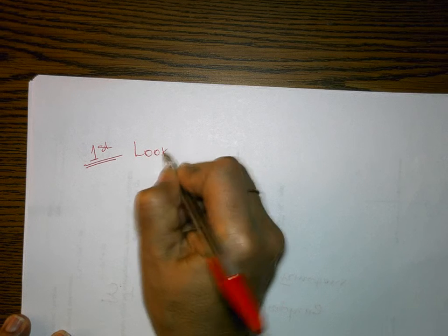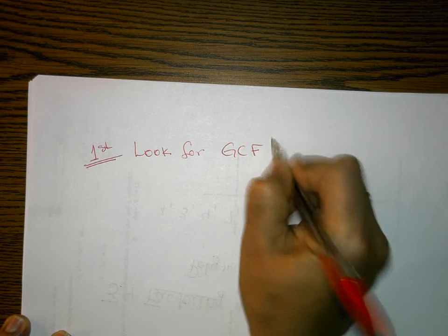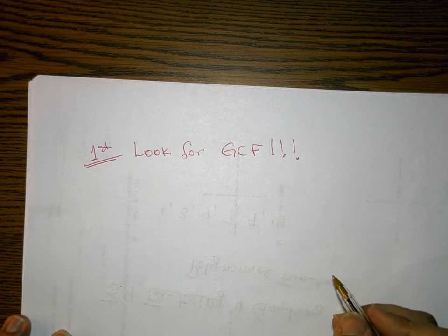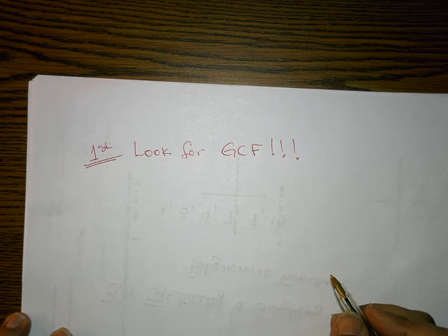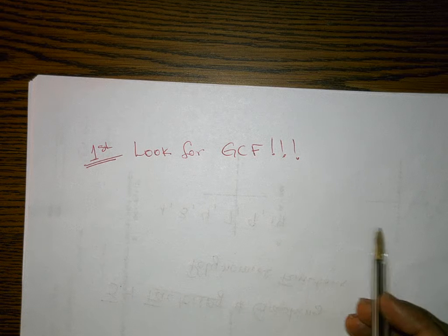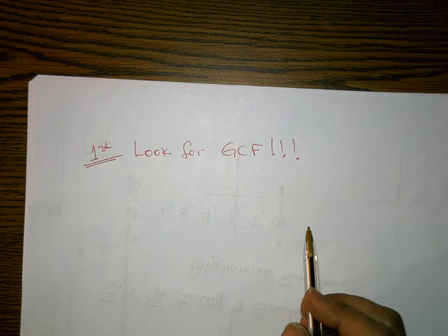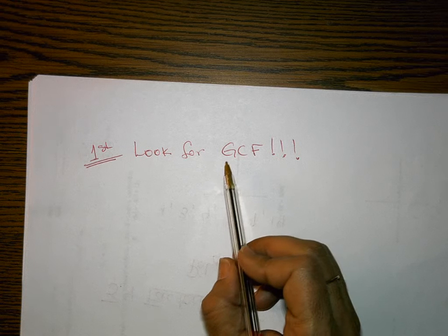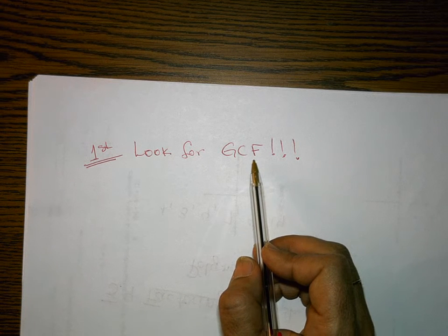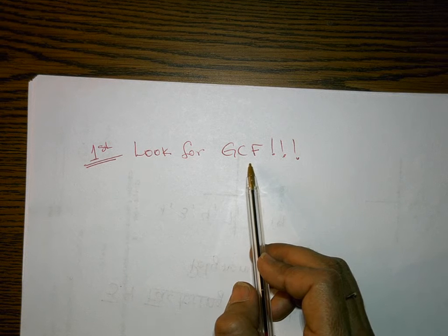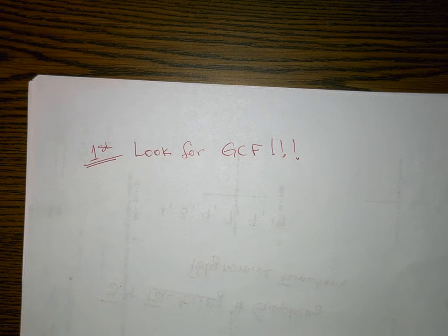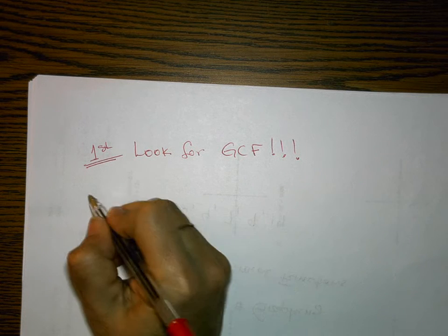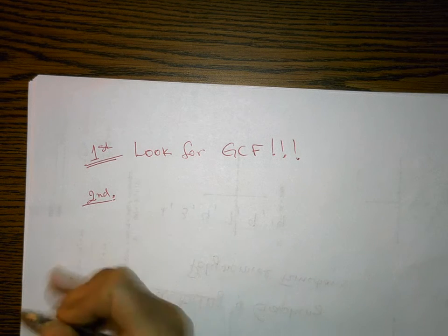Let's do a quick review of things we need to know about factoring. Rule number one — the first and most important thing about factoring — is to always look for the GCF. You scan the polynomial, look at all the terms, see what they have in common, and factor out the greatest common factor. If you don't, it is not completely factored.